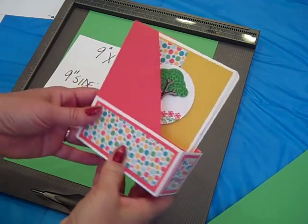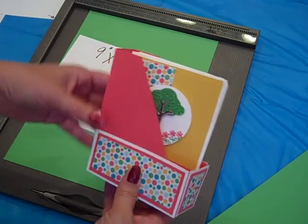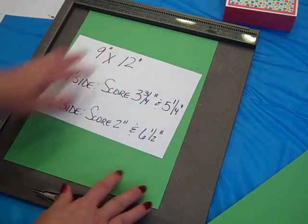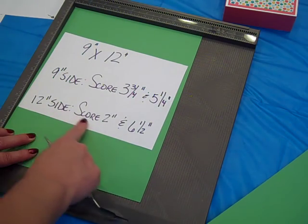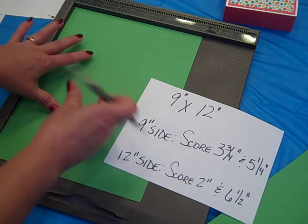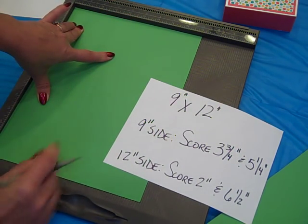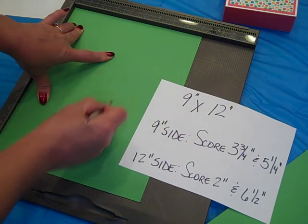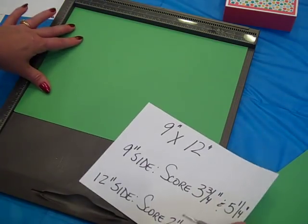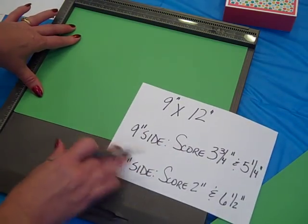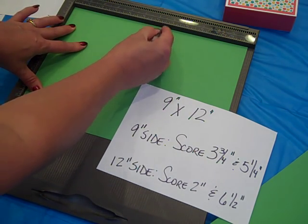To make our mini magazine holder using 12x12 cardstock, the first thing we want to do is trim the cardstock to 9x12. Along the 9 inch side we're going to score at 3¾ and at 5¼. Then we'll turn it so that the 12 inch side is along the top and we're going to score this at 2 and at 6½.